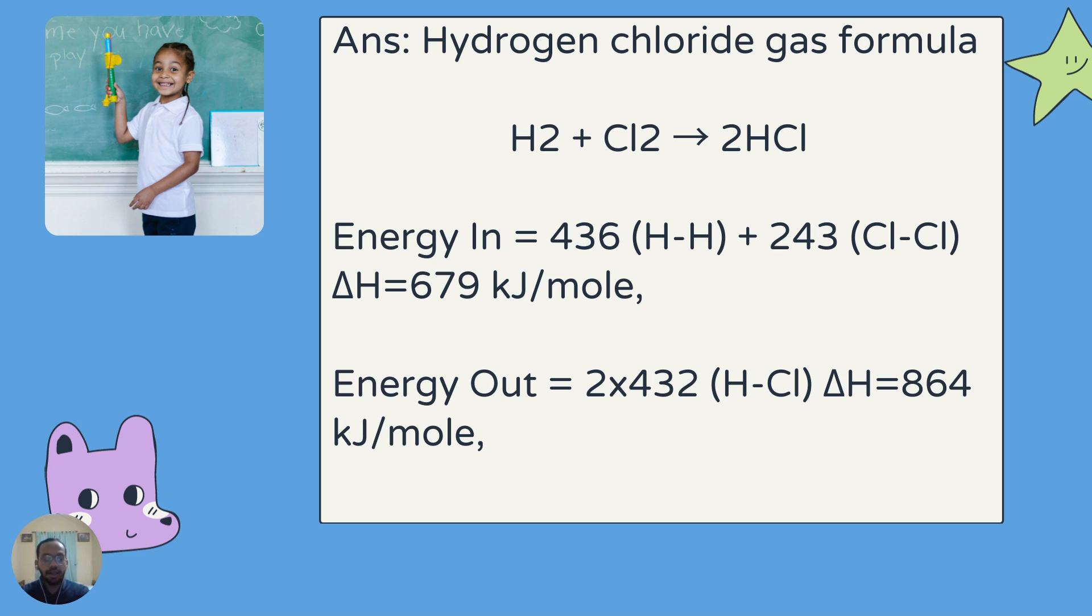I have said already that the values in the bond energy table are for 1 mole. So, we have to multiply 432 with 2, and this 432 is for the bond H-Cl. It will give us 864 kJ per mole, and these values represent energy out.